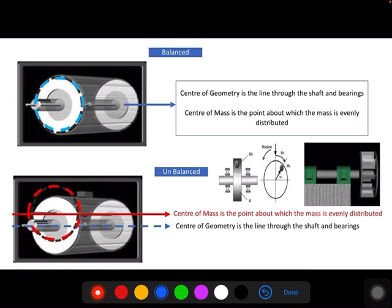This slide clearly explains what happens when a rotating impeller has some unbalance. First picture describes the equipment in balanced condition. Before that, we need to understand two terms: center of geometry and center of mass. Center of geometry is the line through the shaft and bearings geometrical axis, and second is center of mass. Center of mass is the point about which mass is evenly distributed, that is center of gravity. When the rotor or any equipment is balanced properly, then center of gravity and center of mass coincide with each other. There is no offset between the center of geometry and center of mass.